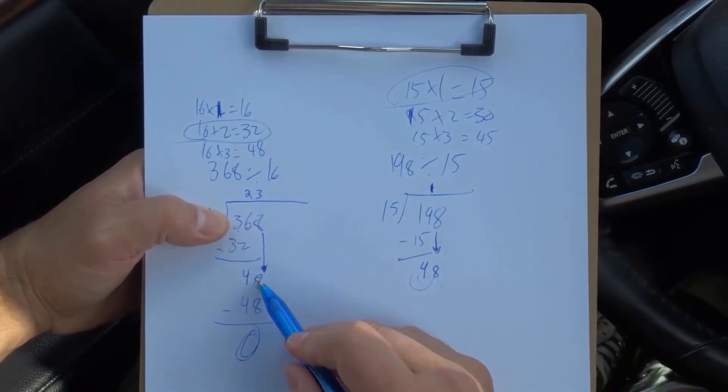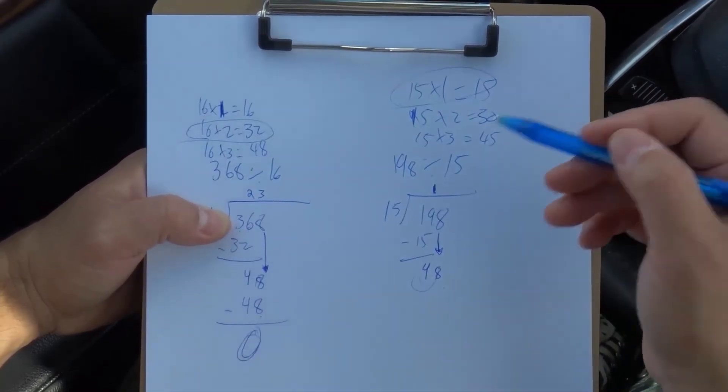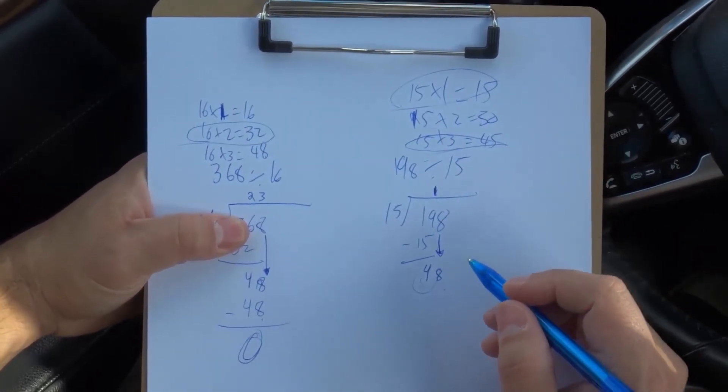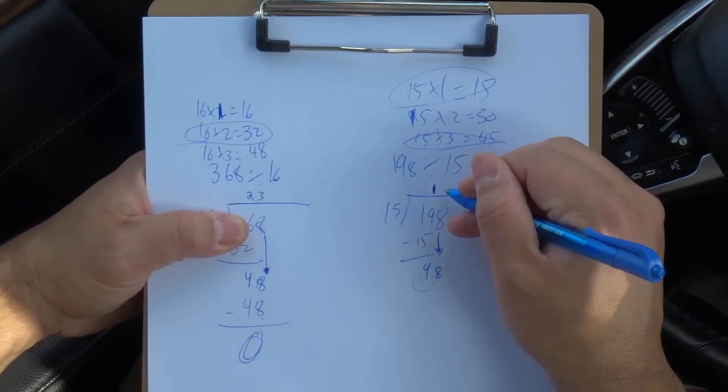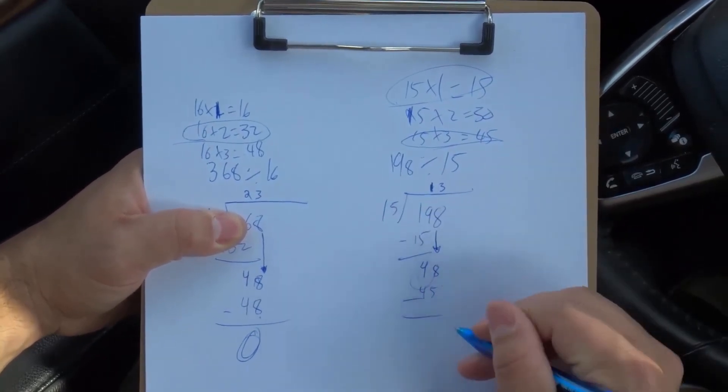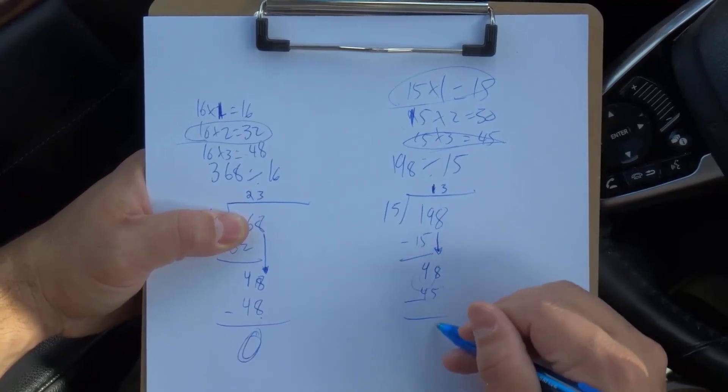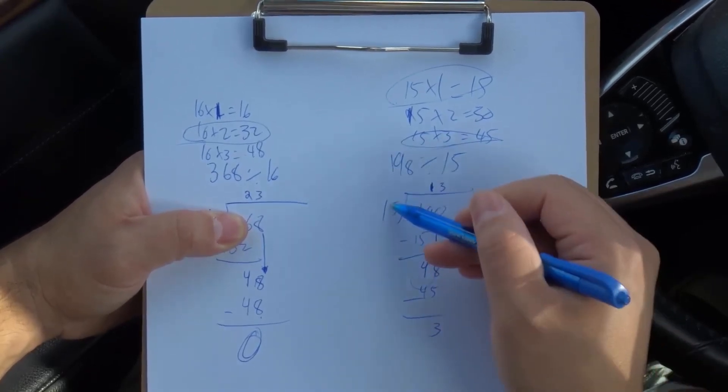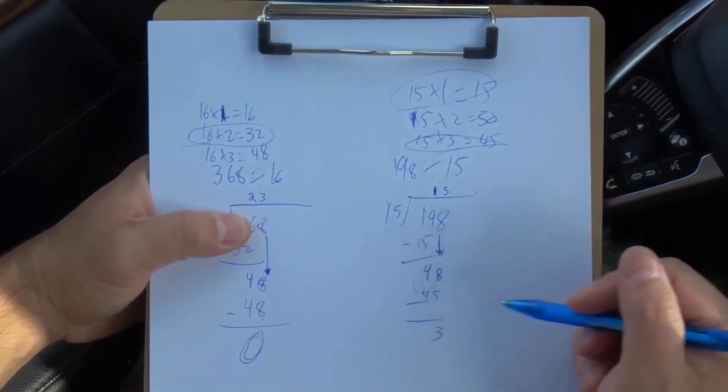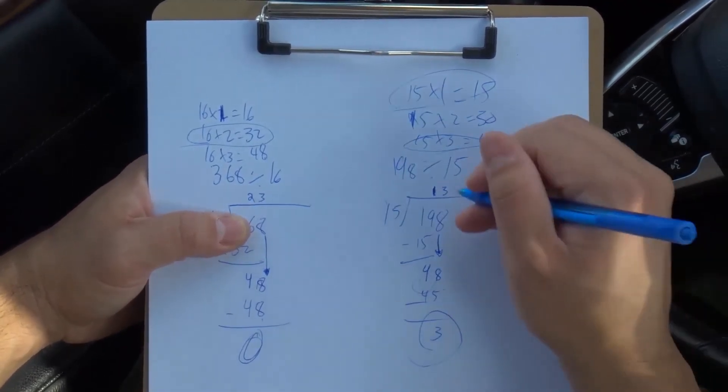You want to get exactly the number or close to it, but not above. So 15 times 3 is 45. I minus 45 from 48, which leaves me with 3. 3 can no longer go into 15. 15 can't go into 3. 15 is much bigger than 3. So 3 is what's left over, which is the remainder.